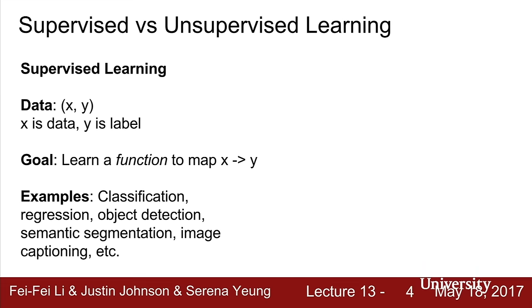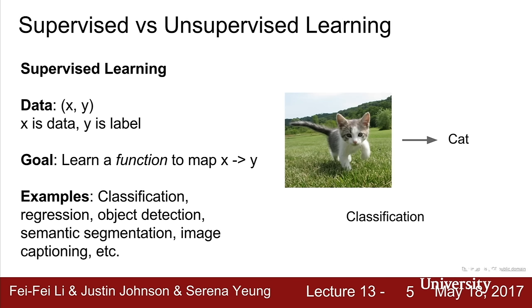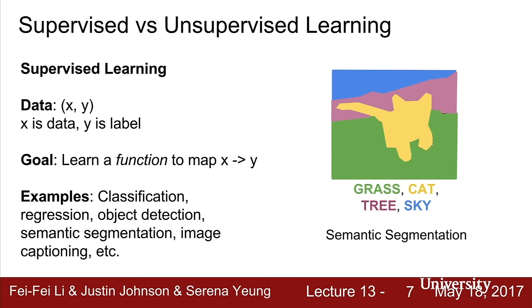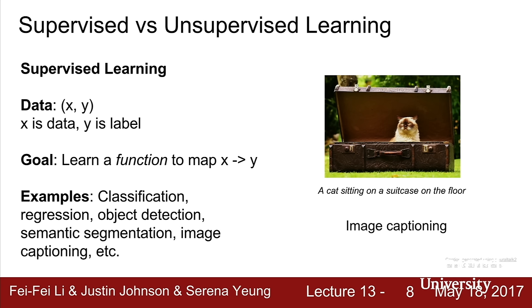So far in this class, we've talked a lot about supervised learning. In the supervised learning setup, we have data X and labels Y, and our goal is to learn a function mapping from X to Y. Labels can take many forms: classification outputs a class label, object detection outputs bounding boxes, semantic segmentation labels every pixel, and image captioning outputs a sentence in natural language.